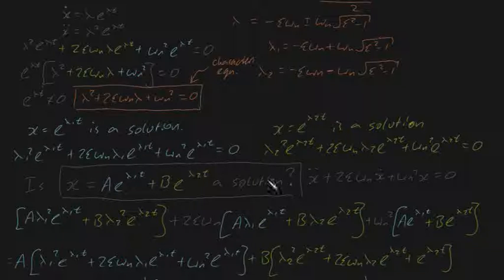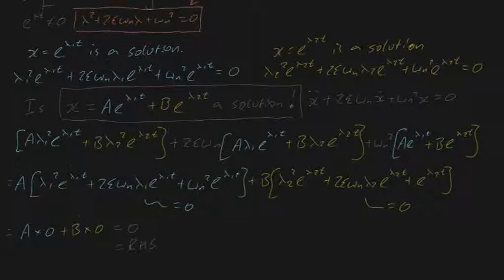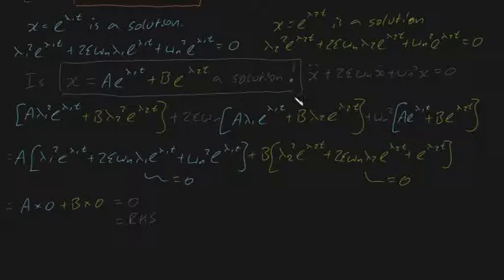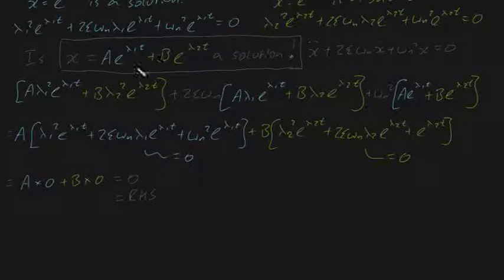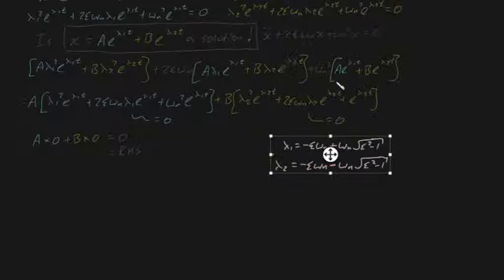x equals this expression is indeed a solution, so let's replace the question mark with an exclamation mark. As a brief aside, we could have also done this using the superposition theorem in mathematics, but I like to show things from scratch. Now that we have our generalized expression, let me zoom out a little, and substitute the values of lambda 1 and lambda 2 in to find the actual generalized equation of motion. Let me paste lambda 1 and lambda 2 just here.